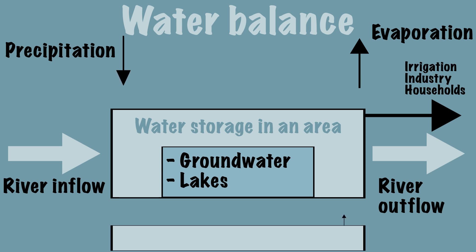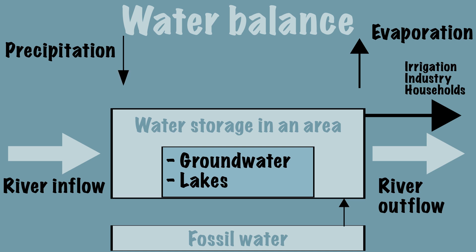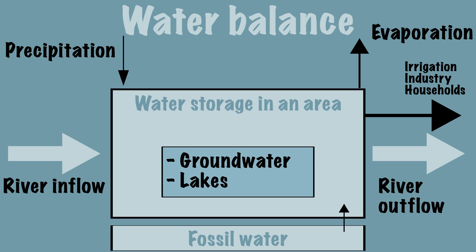This can be solved by pumping up water from deep rock layers. This is different from groundwater because it originated a long time ago and is therefore called fossil water. Because there is no inflow into this type of water, it will eventually run out. The use of fossil water is therefore not sustainable for future generations.